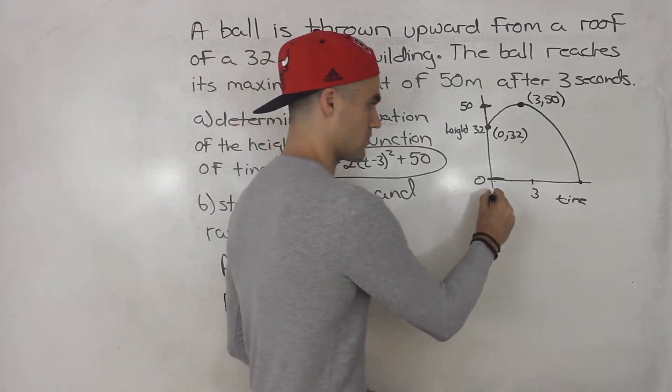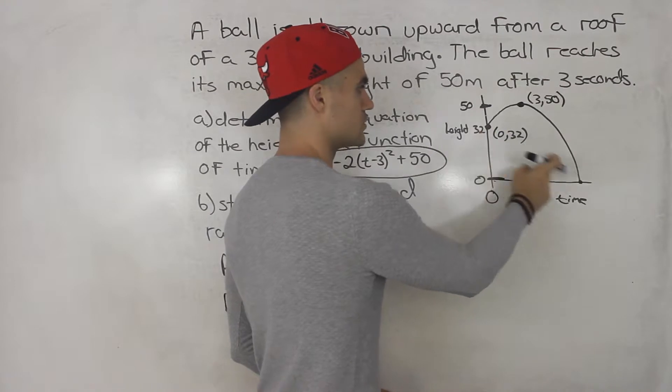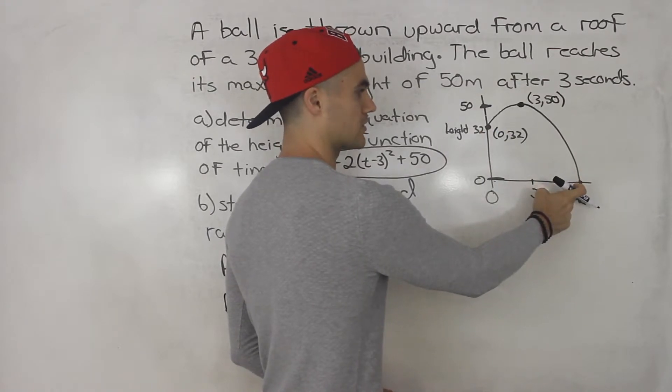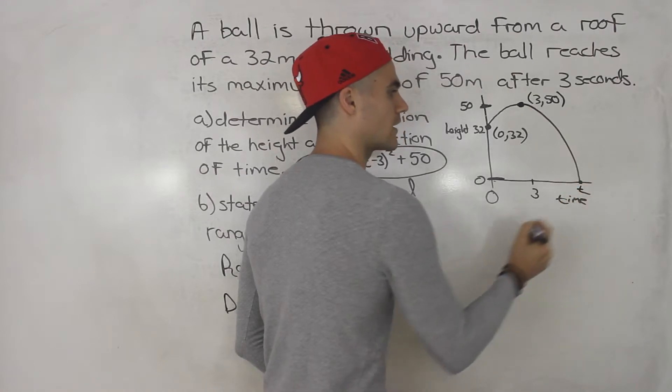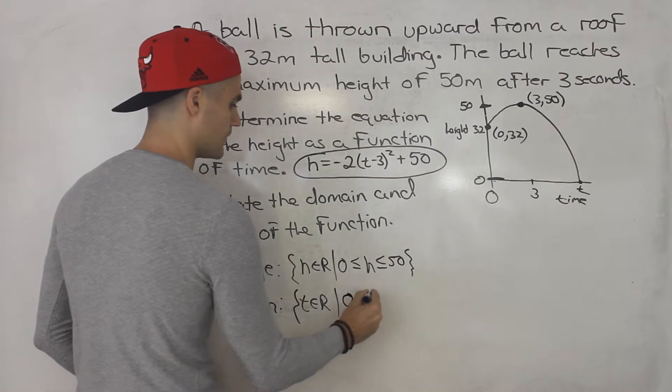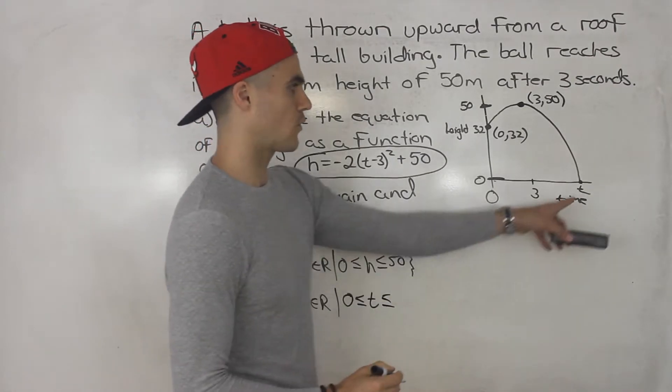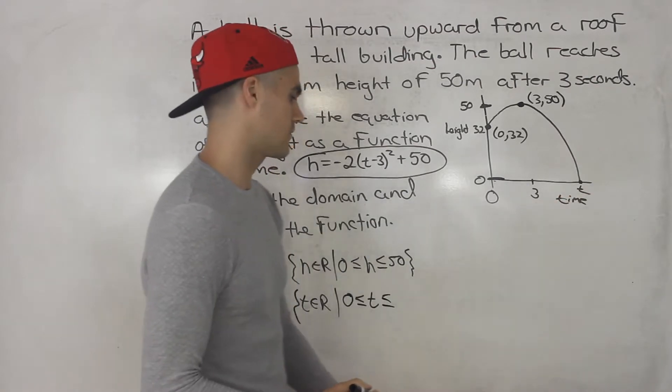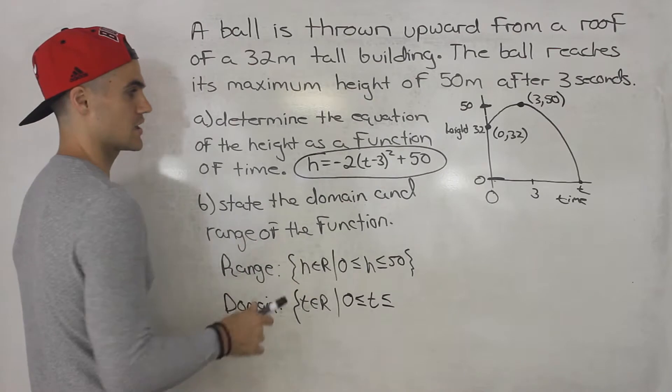So time is an element of real numbers. What's the time going to be in between? Well, it's going to go from 0 when the ball is thrown off the roof to when the ball hits the ground. But notice that we don't know what that time is right there when it hits the ground. But we do know that it's going to start at 0. But we have to solve for when the ball is going to hit the ground.